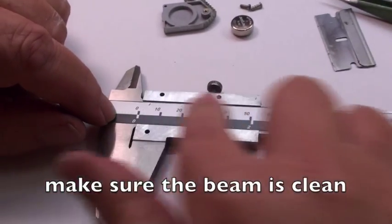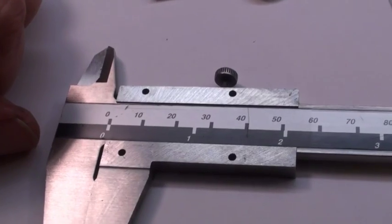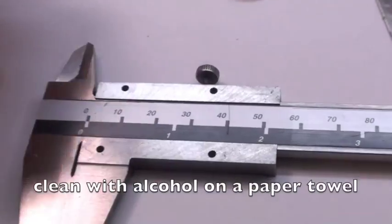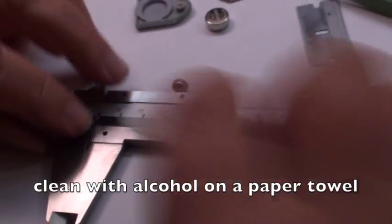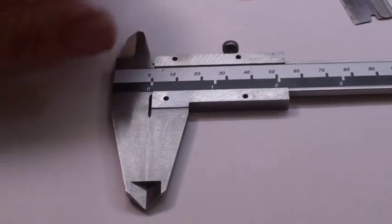Also here, the beam has to be nice and clean, and it happens to be clean. Otherwise, use a little bit of alcohol on a piece of paper or a towel like this, and just wipe it. We're all set to go.